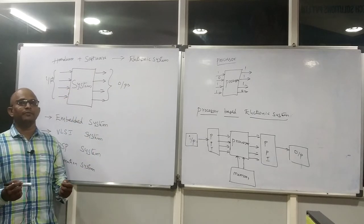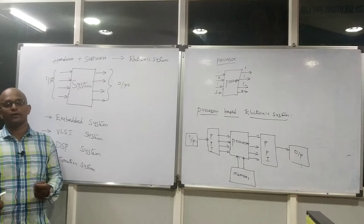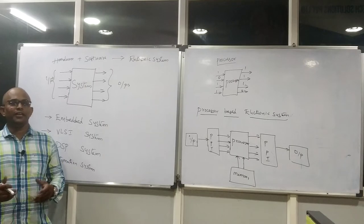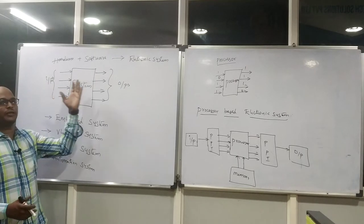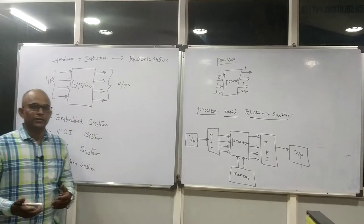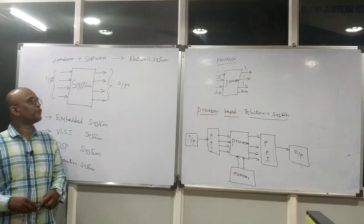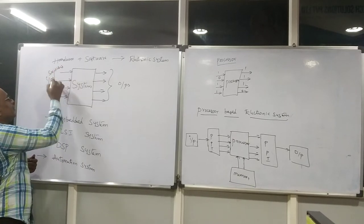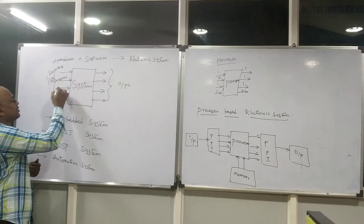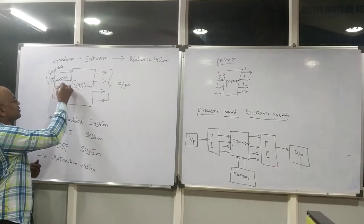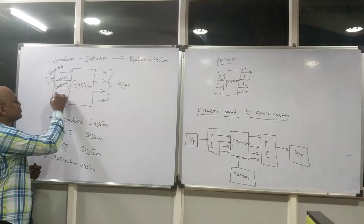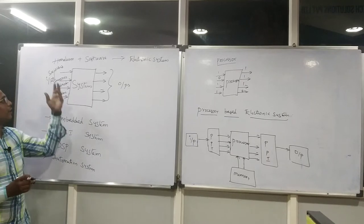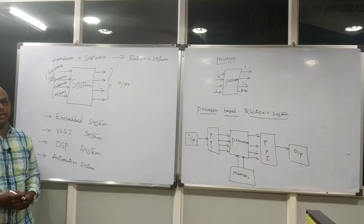Any system — whether a simple calculator, iPod, consumer side, defense side, or medical products — any product you touch, you will find some inputs and some outputs. The system is operated with the help of different inputs like switches, or sometimes sensors, card readers, or wireless modems. These are the kinds of inputs you may find for your electronic unit.